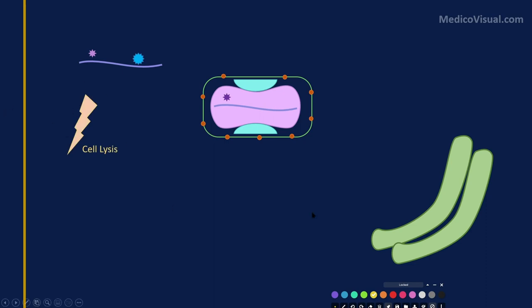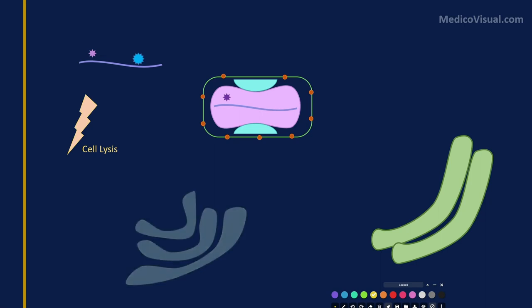If cell lysis occurs at this stage — if the cell breaks down — these mature virions may be released into the blood, and that is the source of mature virions found in blood. We might also find extracellular virions released by exocytosis, or even immature virions as a result of early cell lysis.